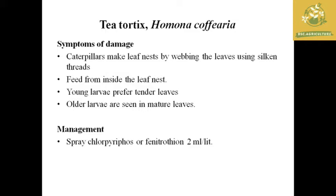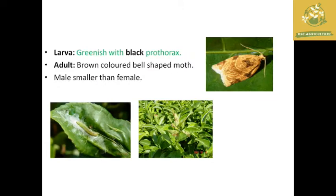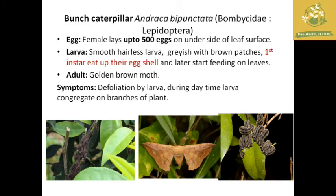The next pest is tea tortrix, with the scientific name Homona coffearia. The symptom of damage: caterpillars make leaf nests by tying leaves with silken threads around young leaves, and the larvae feed inside the leaf nest. Young larvae prefer tender leaves and older ones are seen on mature leaves. The effective management is spraying of chlorpyrifos or fenvalerate at the recommended dosage of 2 ml per liter.